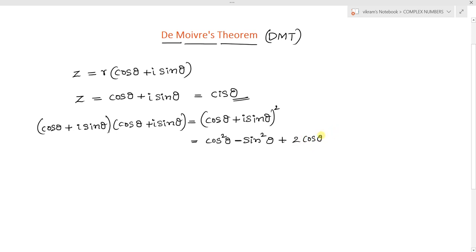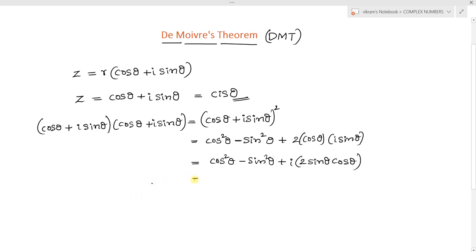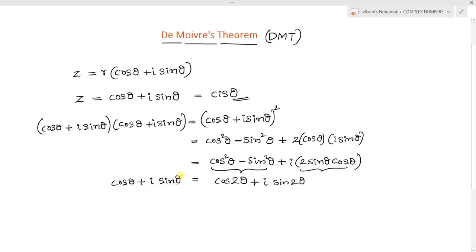Adding the 2ab term, which is 2 cos θ · i sin θ, we can simplify this as cos²θ minus sin²θ plus i·2 sin θ cos θ. The term 2 sin θ cos θ can be written as sin 2θ. So we obtain: (cos θ + i sin θ)² = cos 2θ + i sin 2θ.